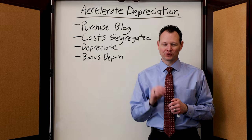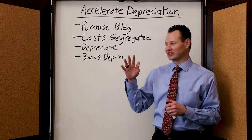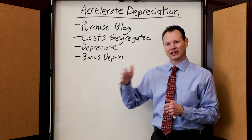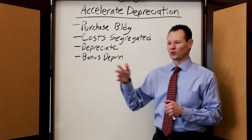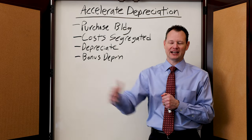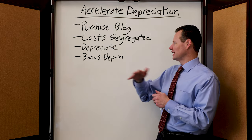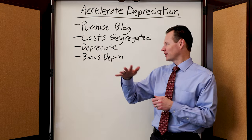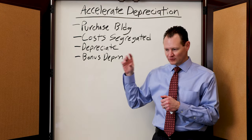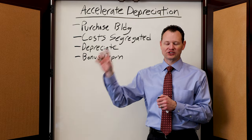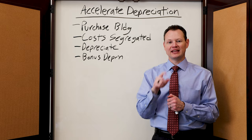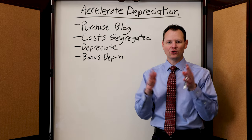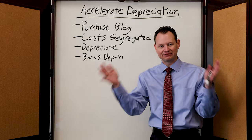Also, the depreciation recapture rules are really beneficial in this case. When you take depreciation on a building like this, you can recognize an ordinary deduction on it. Let's say that you are in the top tax bracket, the 37% tax bracket, and you buy a million dollar building and you're able to accelerate this depreciation and get an extra $100,000 of depreciation because of a cost segregation study. If you take that extra $100,000, you get a $100,000 deduction on your tax return. Then let's say you turn around and sell that building and now you have depreciation recapture. Well, there's a special rule with depreciation recapture that only requires you to recapture that at a 25% tax rate.